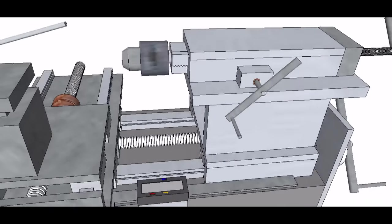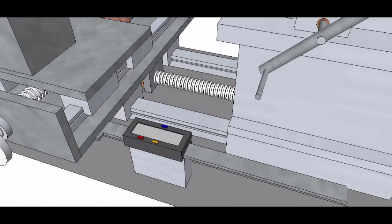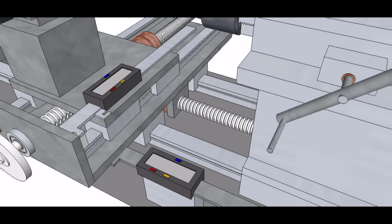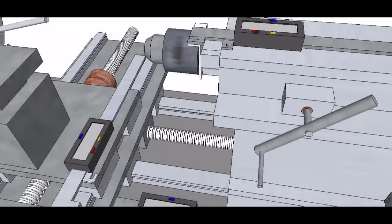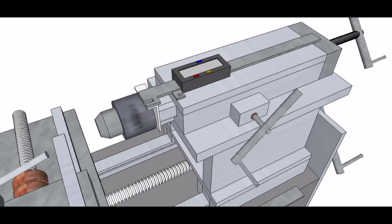I used digital calipers for measuring the carriage, cross slide and tailstock movement. These are handy because they can be zeroed at any position and remember the zero position.